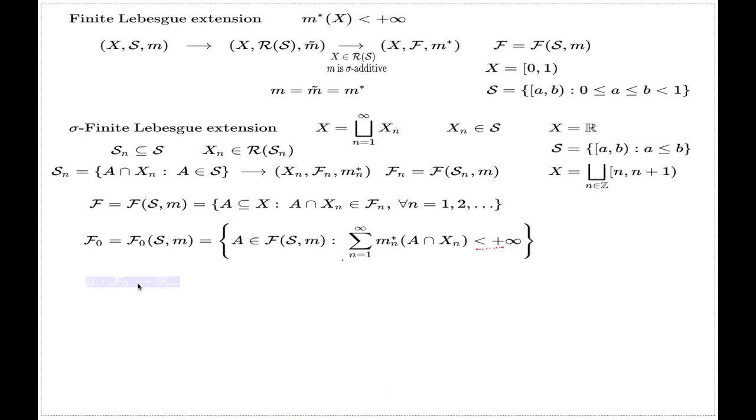Now you define your measure only on this smaller F₀ set by the obvious identity. You take this number as the value of your measure, and I call this measure μ.